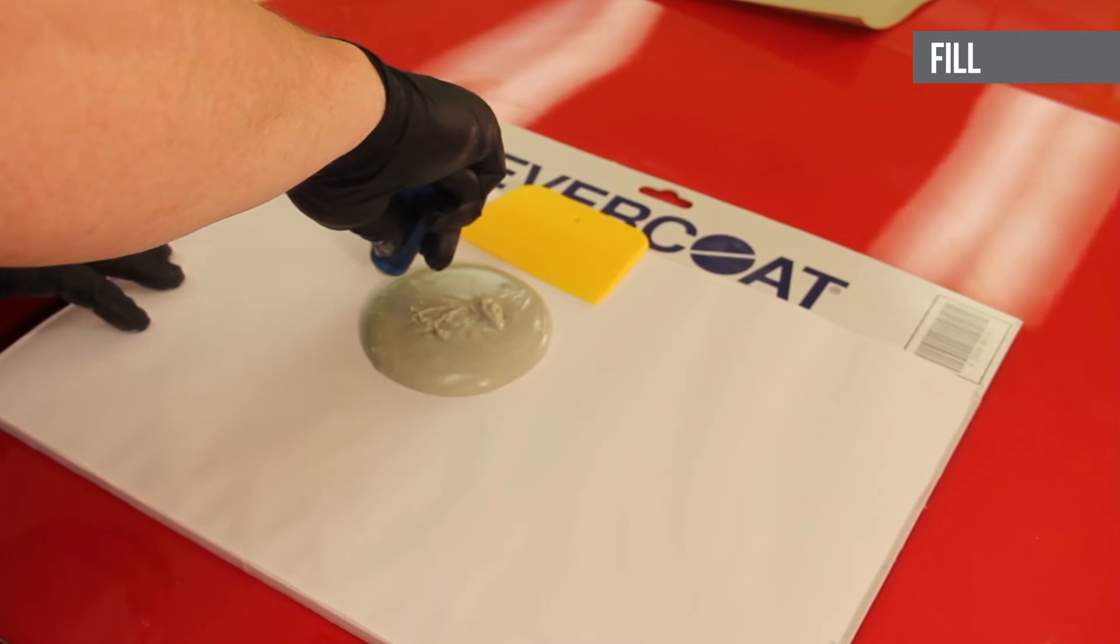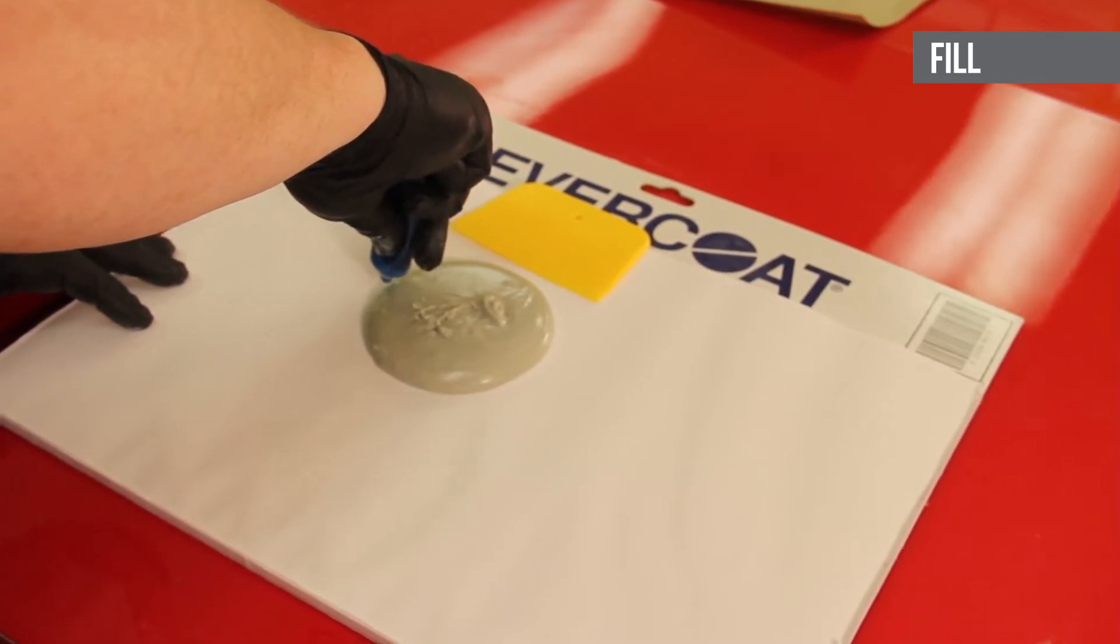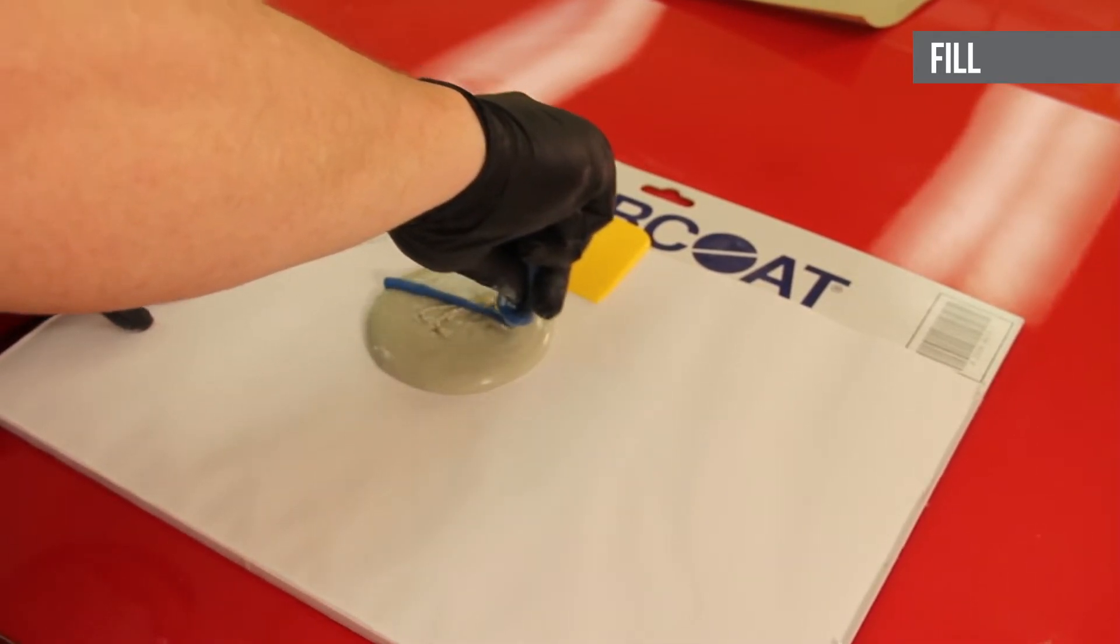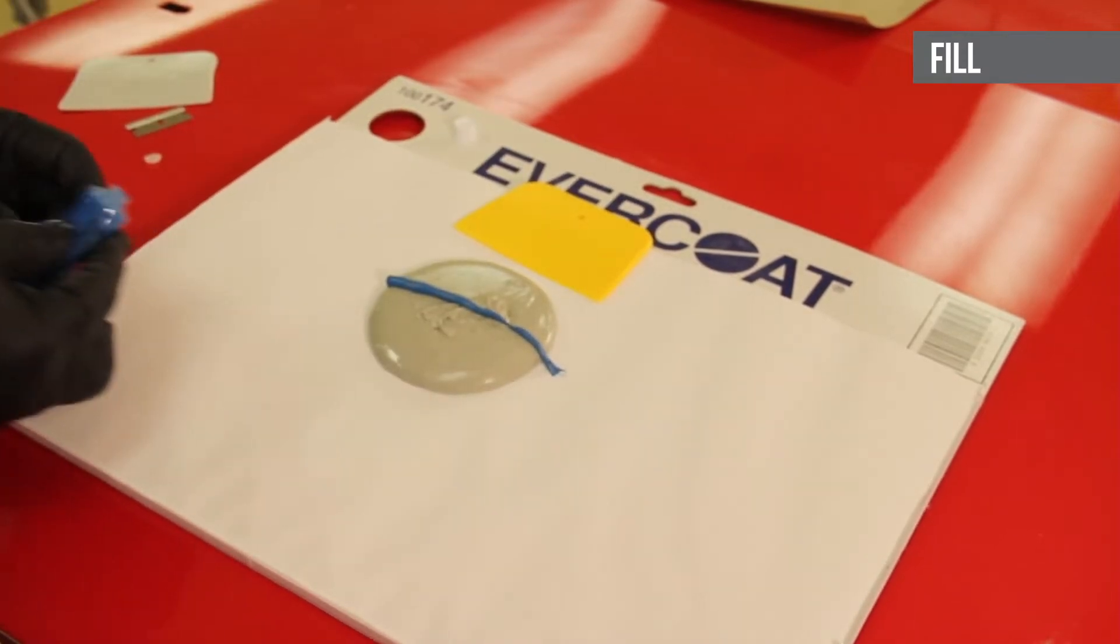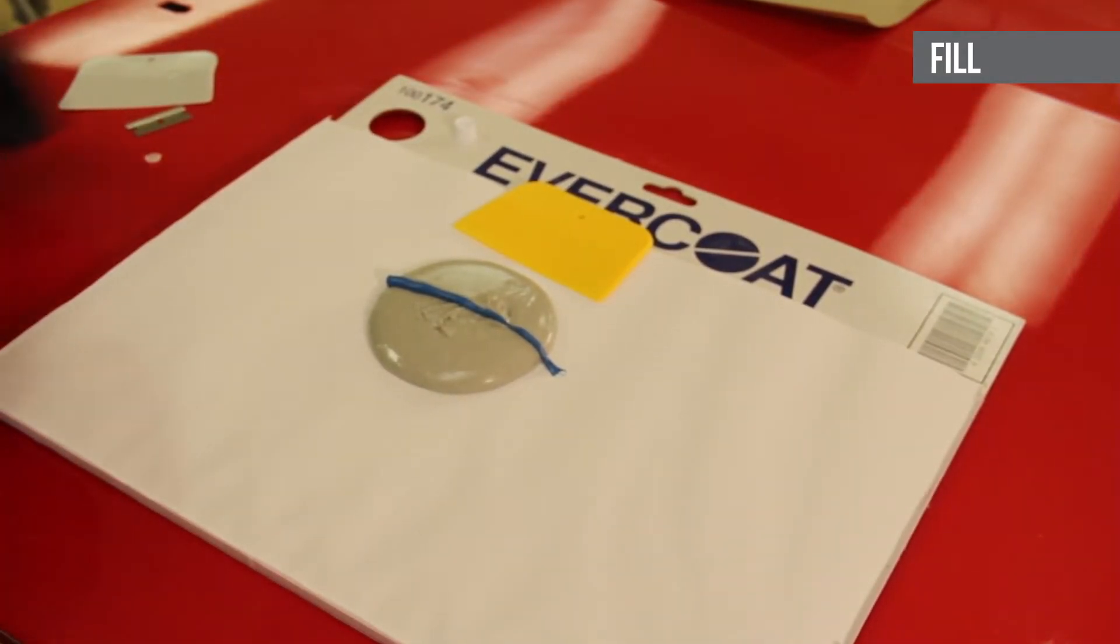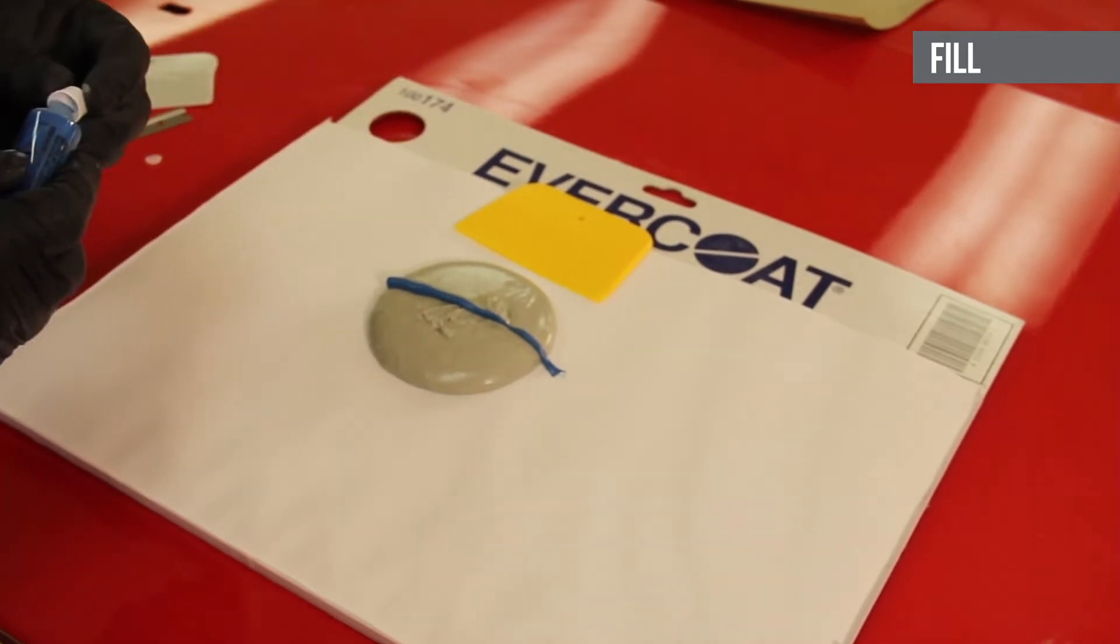The second option is mixing based on the size of body filler puddle. Place the desired amount of filler on a clean, smooth, and non-porous surface. Squeeze a line of cream hardener on top of the body filler based on the filler puddle size.